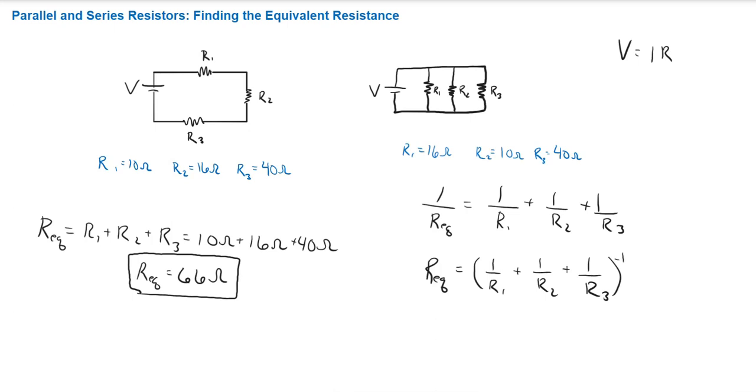The inverse is just shown by everything in the parentheses to the negative 1 power. Now, we'll go ahead and plug in the values here. So that's going to be 1 over 16 ohms plus 1 over 10 ohms plus 1 over 40 ohms. We take the inverse of that and that's going to give us REQ equals 0.1875.